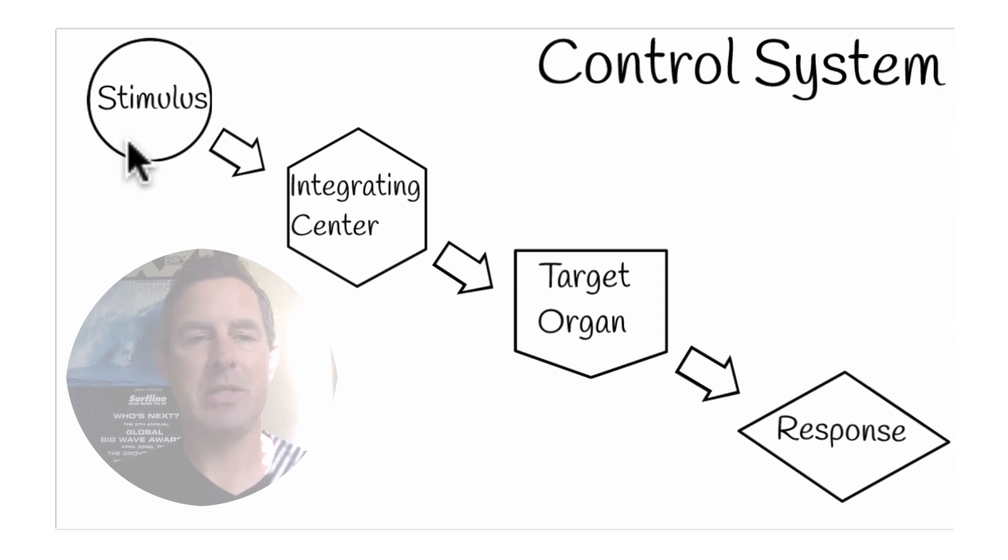There's going to be an input signal going to an integrating center. Once again, if this is the larger systemic control system, that integrating center is the brain. If it's a localized one, it doesn't leave that region and doesn't go to the brain. But the integrating center, regardless of where it is, is going to determine what needs to happen to reset that homeostatic variable back to its acceptable range.